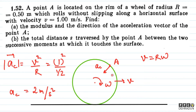Now look at the direction of the acceleration — it is centripetal, directed toward the center. Now let's move to the second part: what is the total distance S traversed by point A between the two successive moments at which it touches the surface?